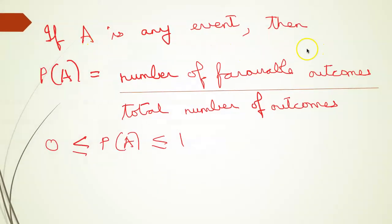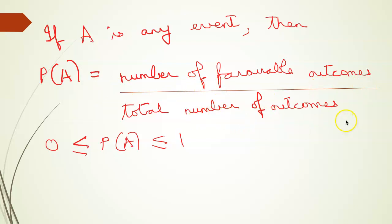If A is any event, then probability of A is defined as number of favorable outcomes by total number of outcomes. We need to remember that probability of A lies between 0 and 1.